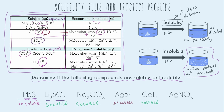Last but not least, we have silver nitrate. I don't see silver listed, but I do see NO₃⁻ — nitrate — right here. And it has no exceptions. Every single compound that contains nitrate is soluble. So silver nitrate is soluble.